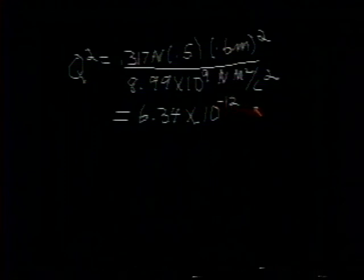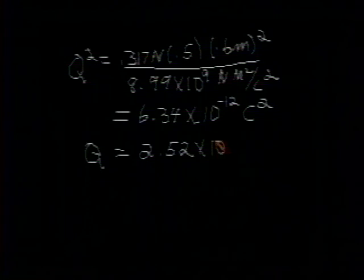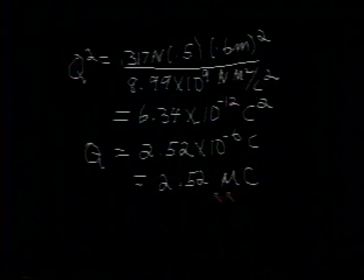And to find q, we must take the square root of that, and the square root of that, again rounded through three significant figures, is 2.52 times 10 to the minus 6 coulombs, which can also be expressed as 2.52 micro coulombs, a common unit in these problems that we're doing, the micro coulomb. Alright, that is the answer then to part B.